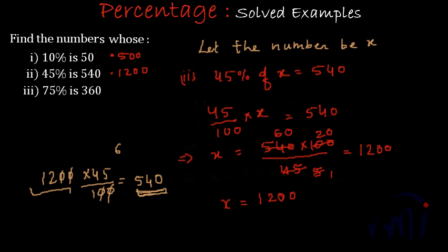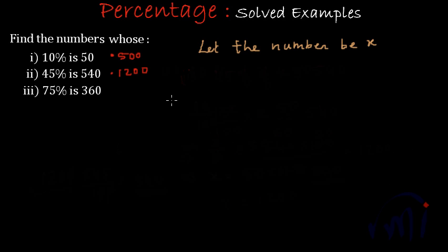And now we will solve the third question and again we will assume the value of that number as x. If we assume the value of that number as x, this question can be reframed as 75% of x is equal to 360, and we have to find the value of x.